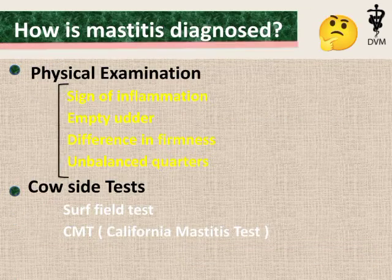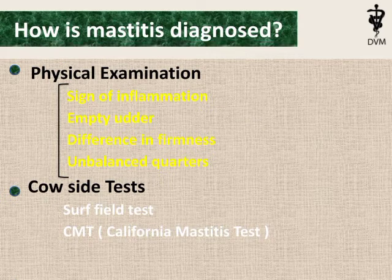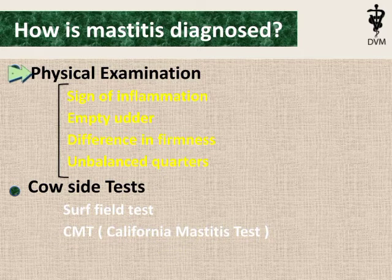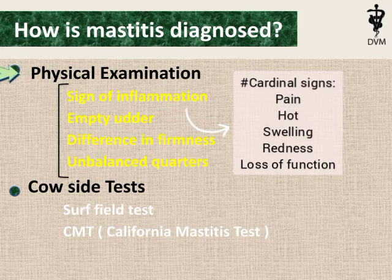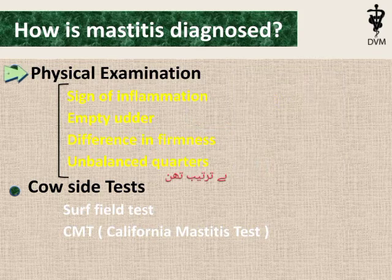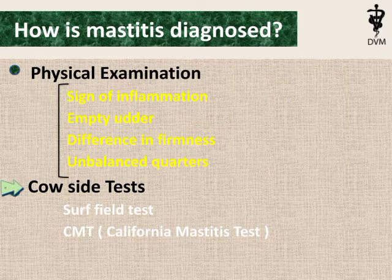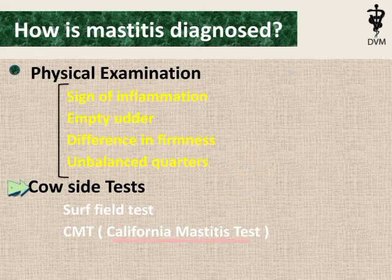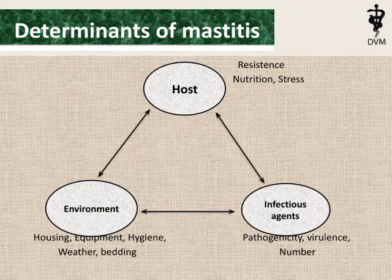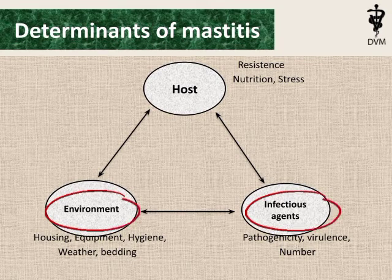How is mastitis diagnosed? It is diagnosed by physical examination, which includes signs of inflammation, empty udder, difference in firmness, and unbalanced quarters of the animal. Other cow-side tests to diagnose mastitis are the Surf Field Test and CMT, which stands for California Mastitis Test.